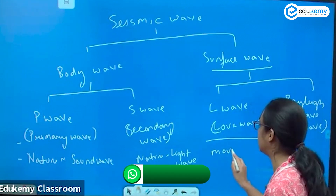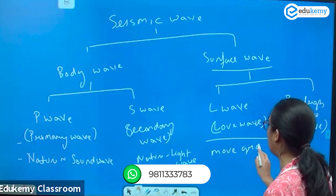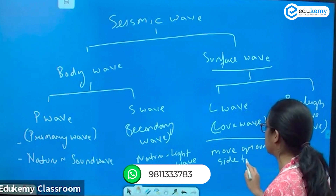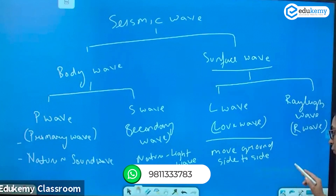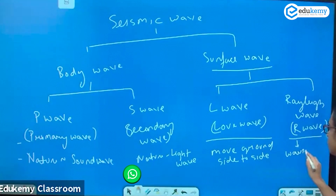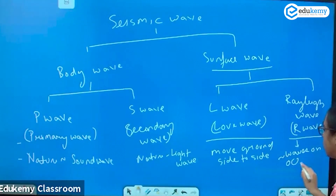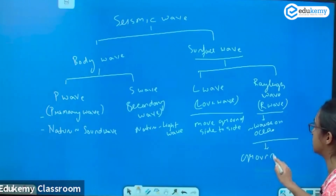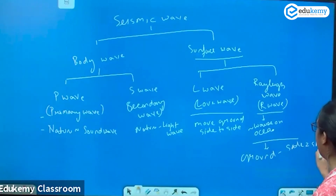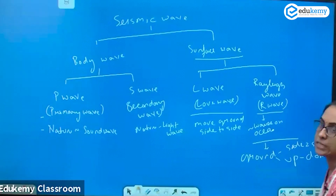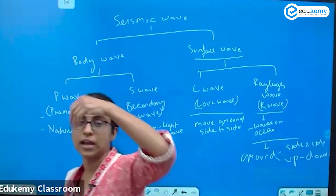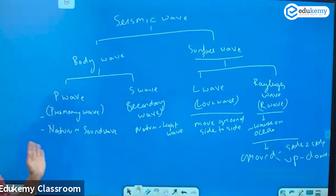The Love wave moves the ground side to side, whereas the Rayleigh wave is like the waves on the ocean — they move the ground not only side to side but also up and down.